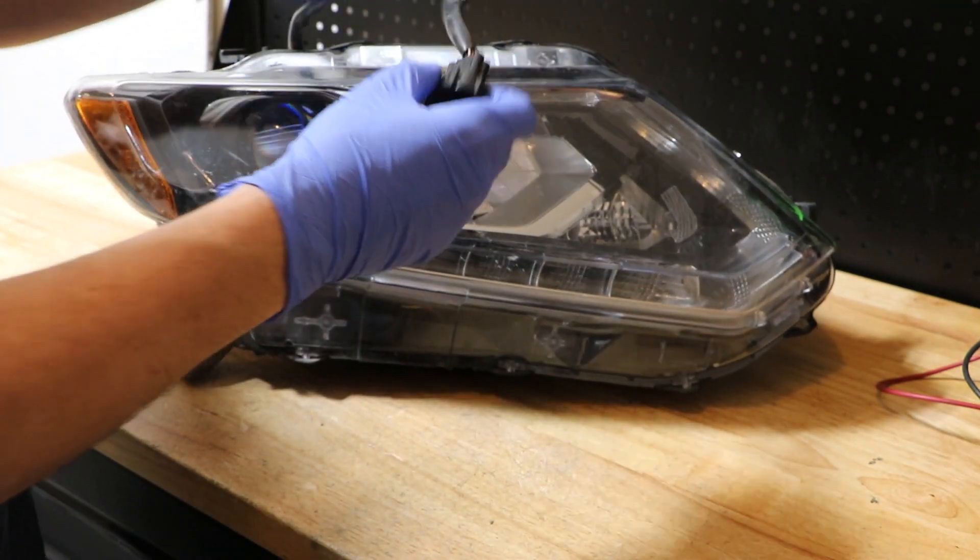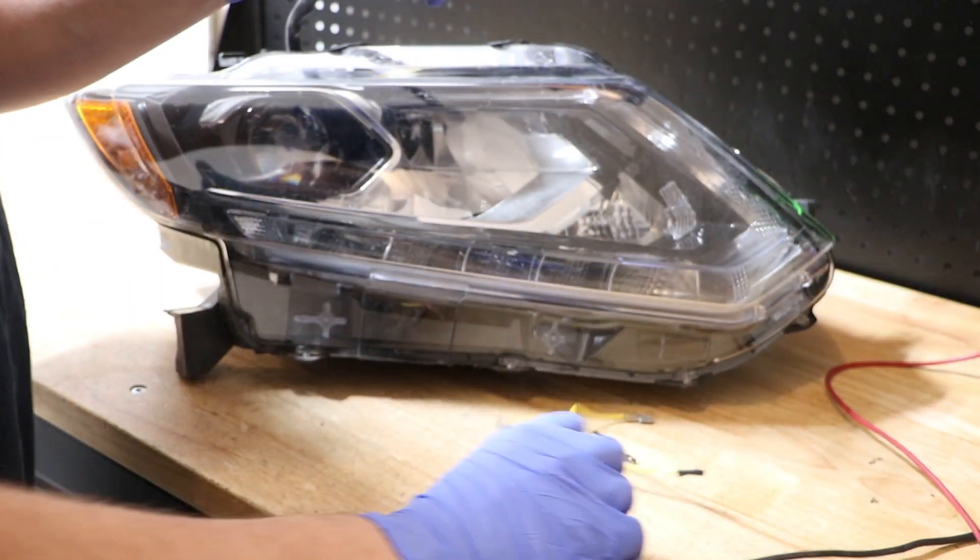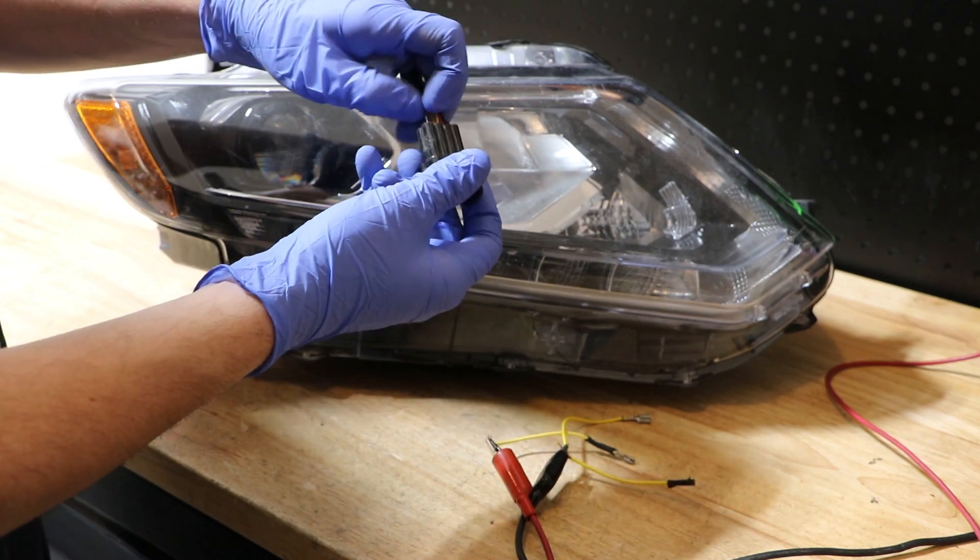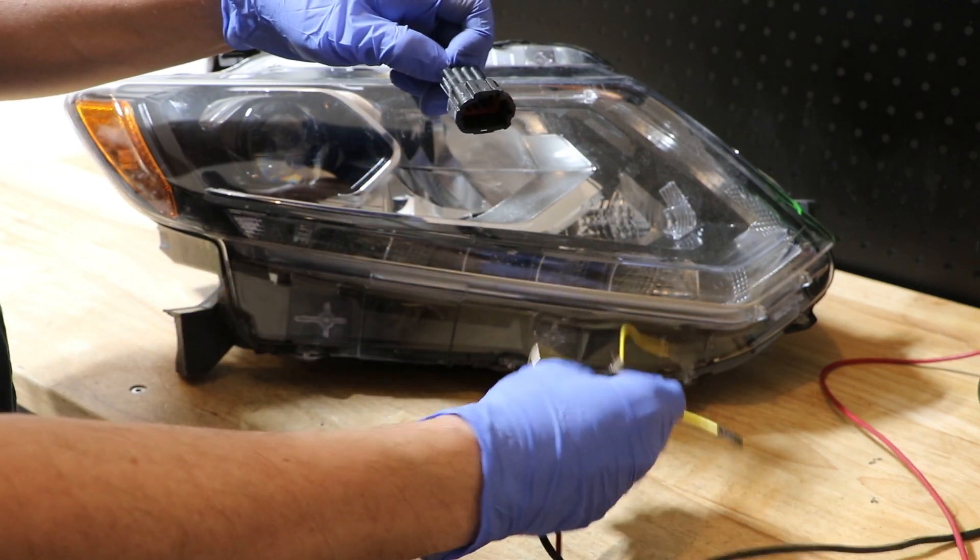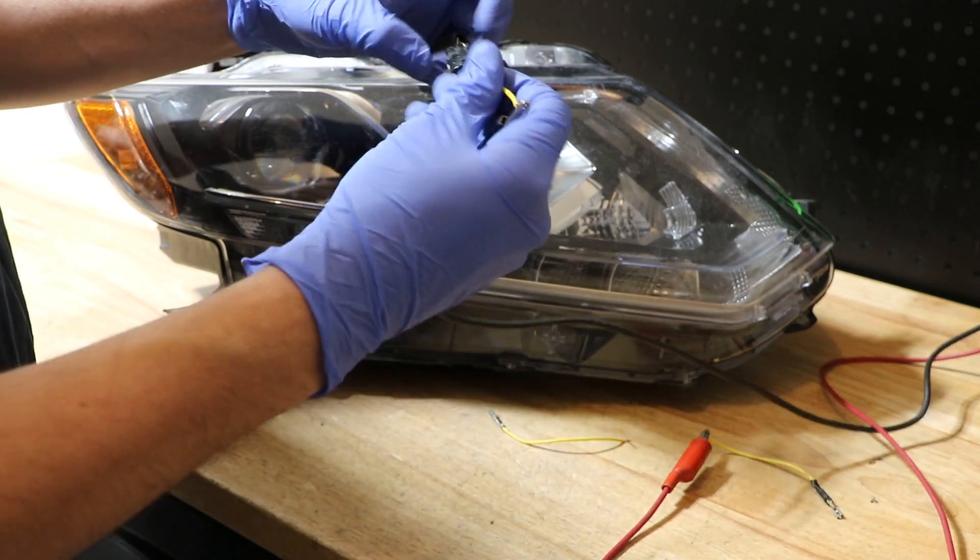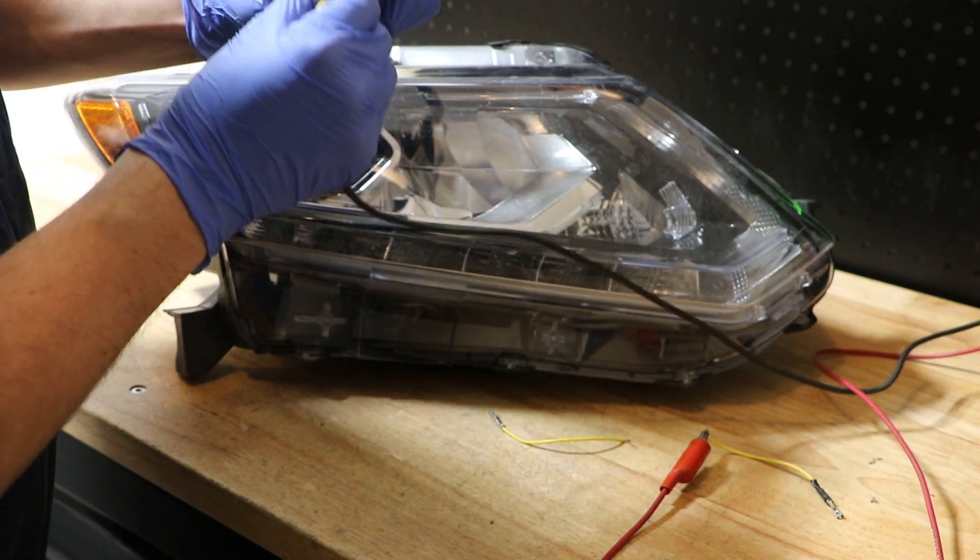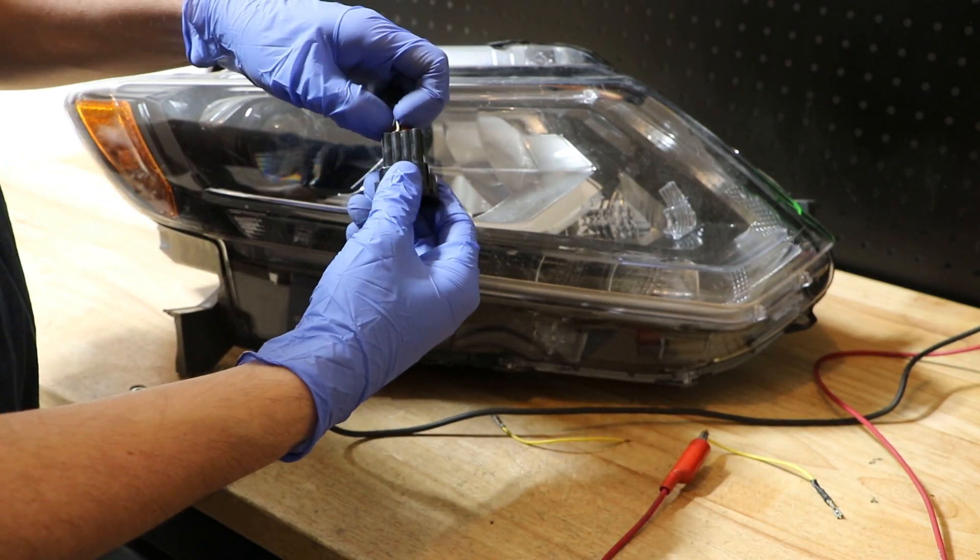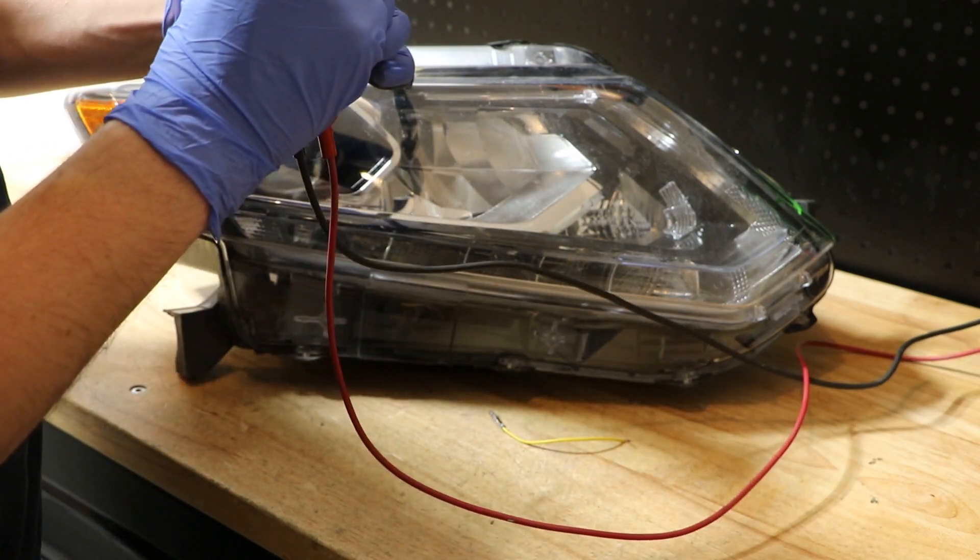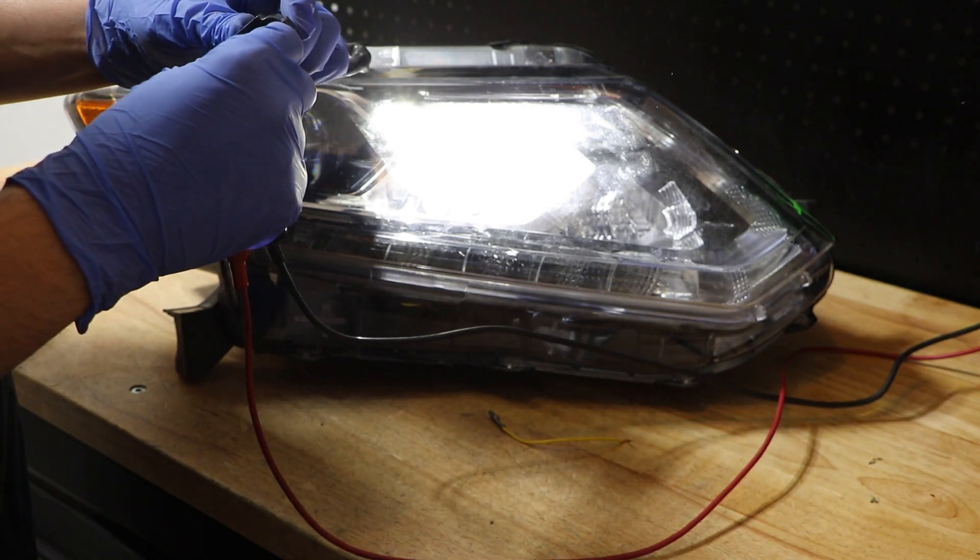Here I've got the wire harness and I'm going to get my power supply ready. I'll take this black wire and ground it off. Then I'll connect the white wire directly next to it to my positive, and you can see that will turn on the high beam.